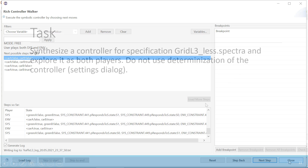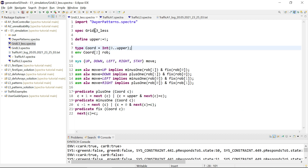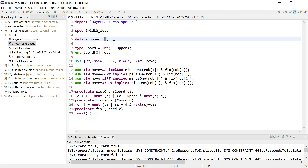For this module, the task is to synthesize a controller from the specification grid L3, then explore it as both players. You should not use determinization — turning it off gives more system choices, which makes more sense when exploring the specification. The specification is from module L3 with some assumptions and guarantees deleted to make it more interesting. It models a robot moving on a grid, restricted to size five for easier browsing.